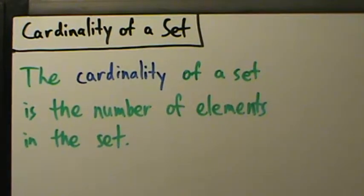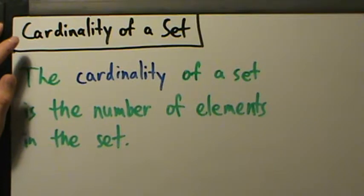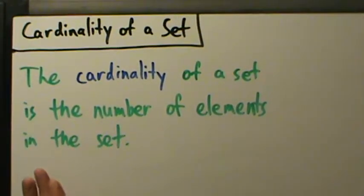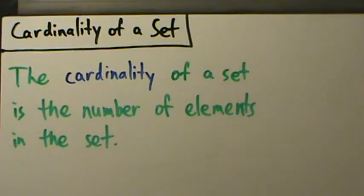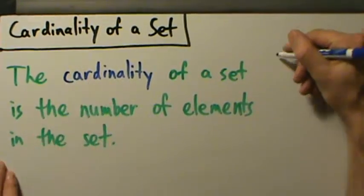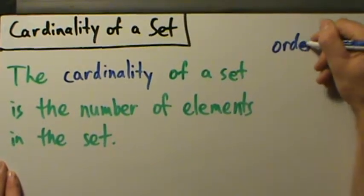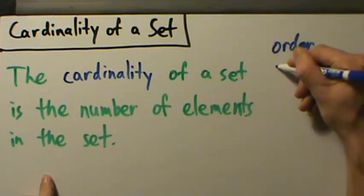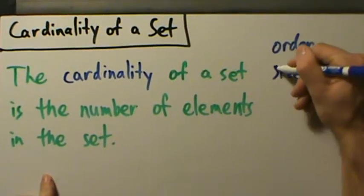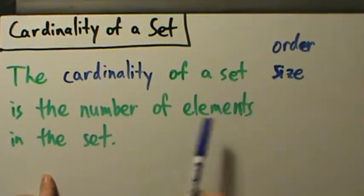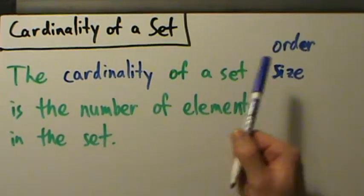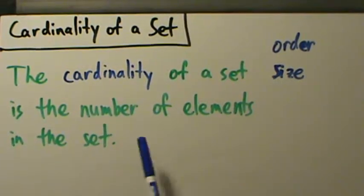In this video we're going to start talking about the notion of cardinality of a set. The cardinality of a set is just the number of elements in the set. Besides cardinality, you could also say order — the order of a set is the number of elements in the set — or you could just say size. Cardinality, order, or size, they all mean the same thing: it's just the number of elements in a set.